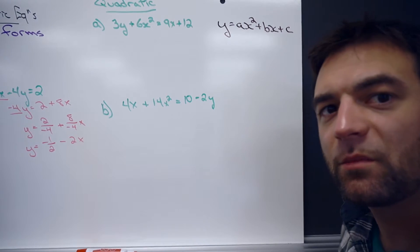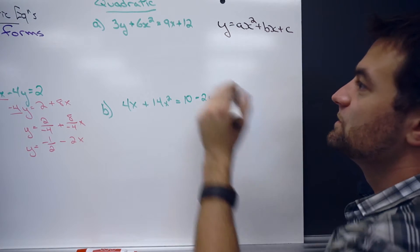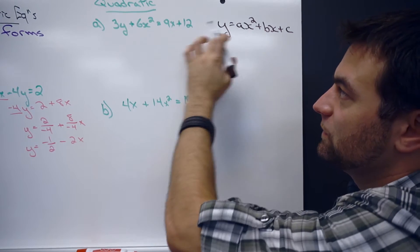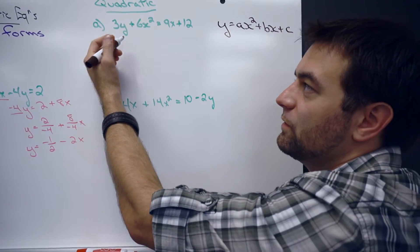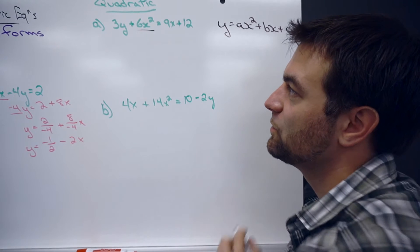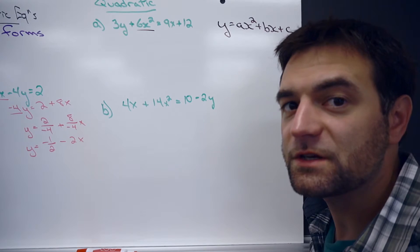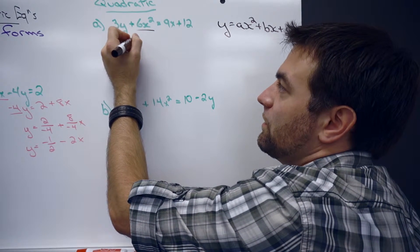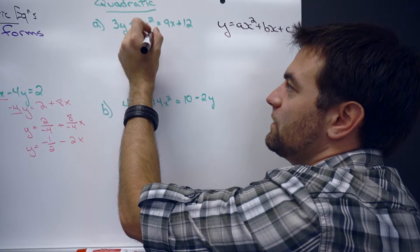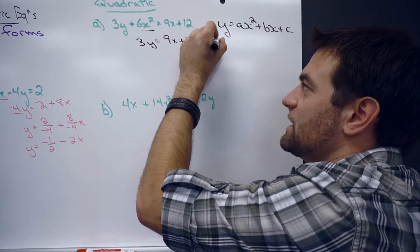a, b, and c are going to be the numbers. And x and y are going to be the letters in the equation. So, we want to get this to look like this with a y equals. So what we can do in the first step here is we'll move that 6x squared over. It's plus 6x squared. The opposite of plus 6x squared would be minus 6x squared. So, 3y equals 9x plus 12 minus 6x squared.